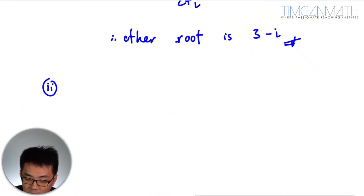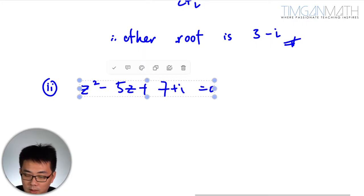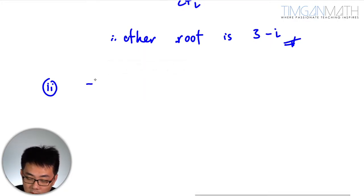So the first thing is actually z square minus 5z plus 7 plus i. Actually what, I think maybe we can just use minus iw square.